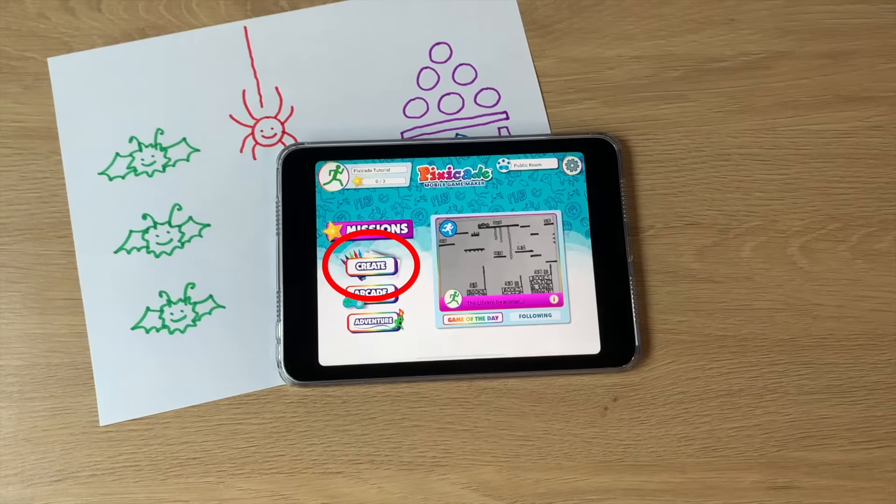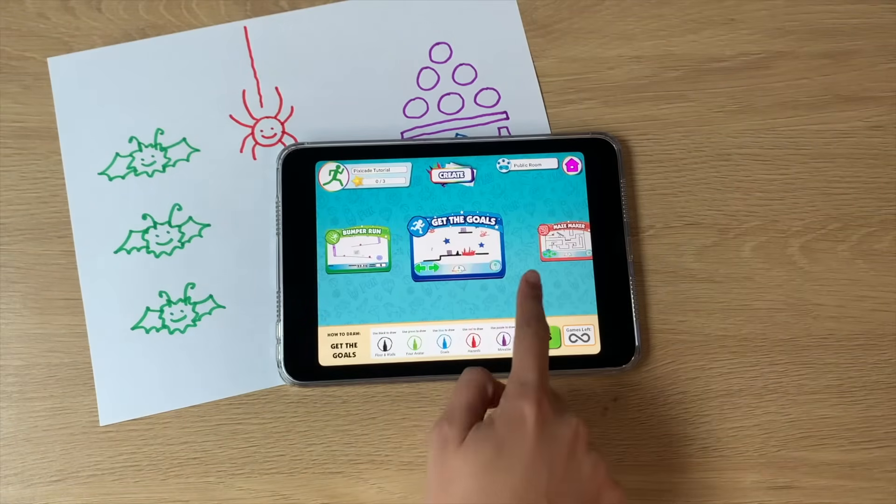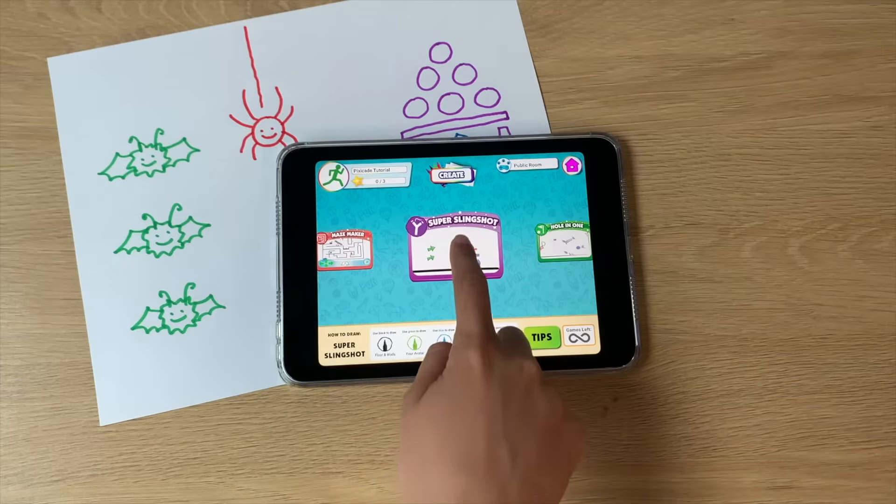Once your drawing is ready, click Create on the home screen. Then, scroll and click the Super Slingshot button to take your picture.